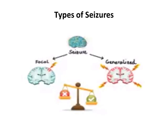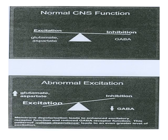Seizures usually occur because of an imbalance of the inhibitory and excitatory processes going on in the brain. Excitation is carried out by glutamate and aspartate neurotransmitters, which are excitatory by nature. Inhibition is carried out by GABA — gamma-aminobutyric acid — the most abundant inhibitory neurotransmitter in the brain. Epilepsy occurs because of too much excitation, meaning glutamatergic neurons are hyperactive, or too little inhibition, meaning GABAergic transmission is suppressed.